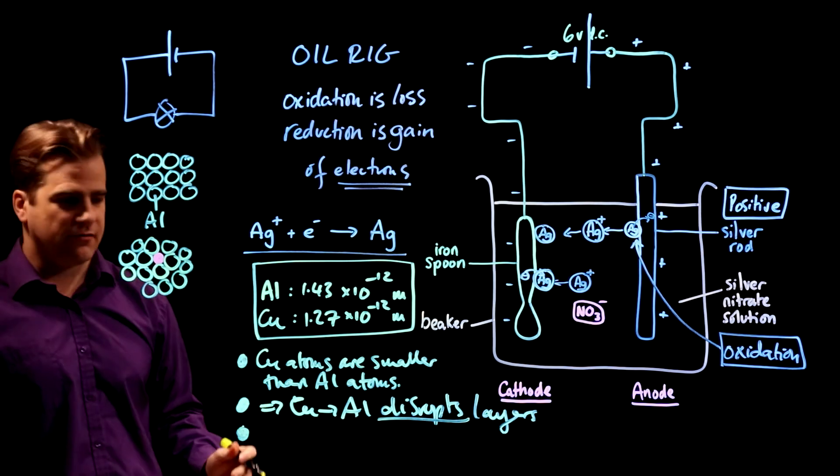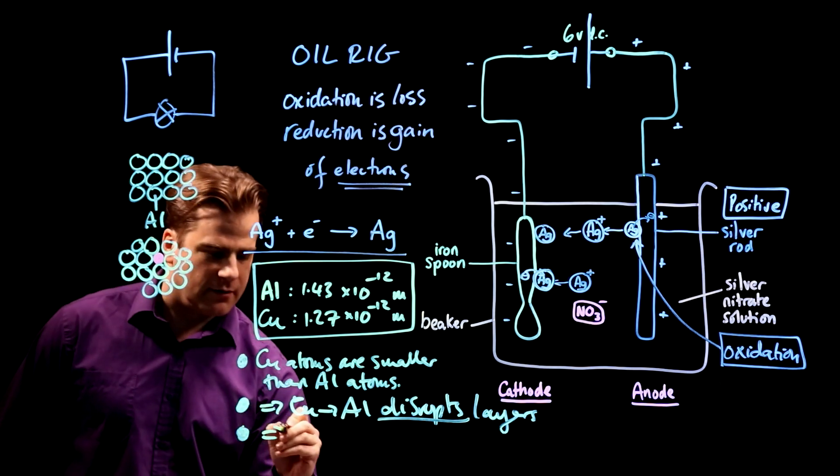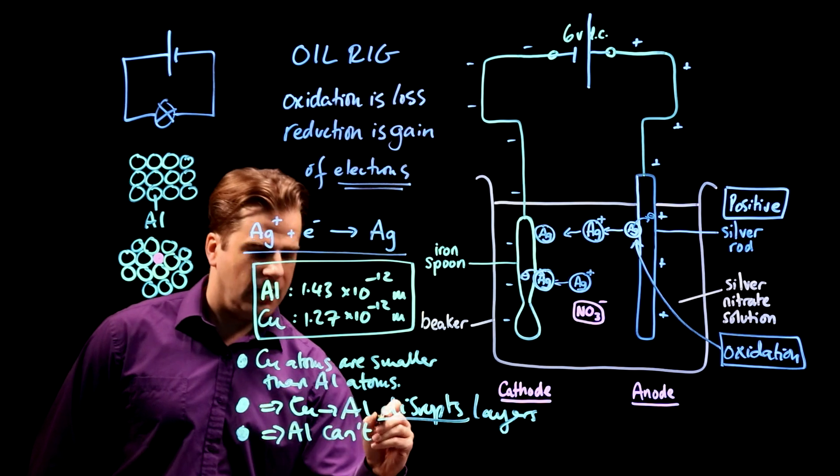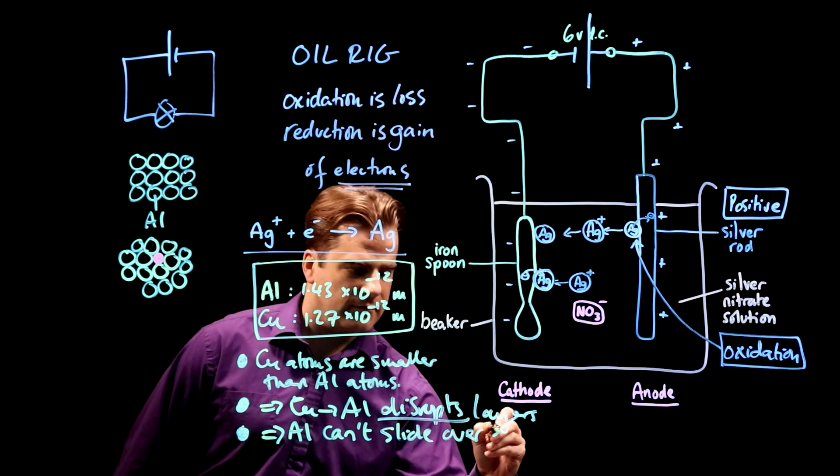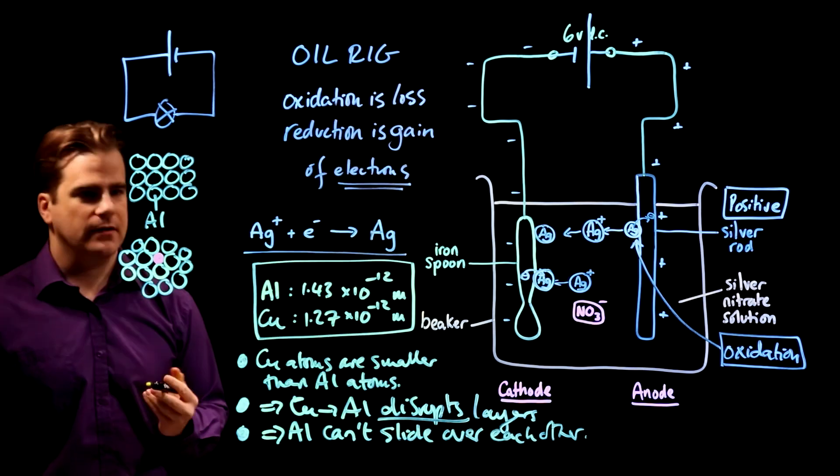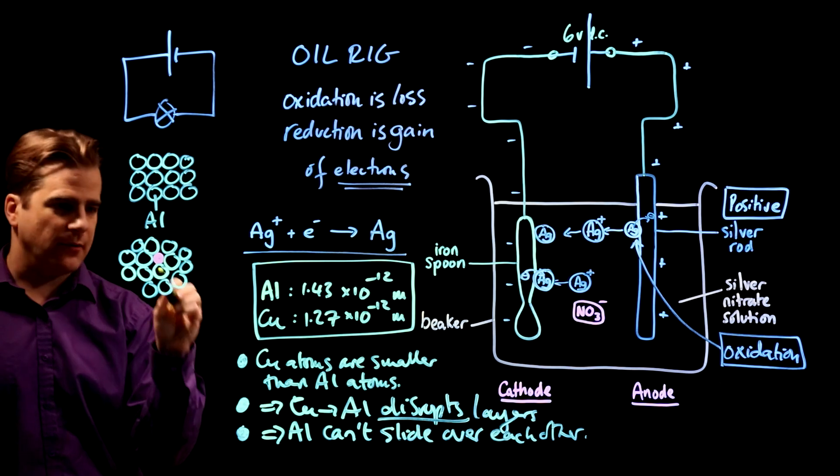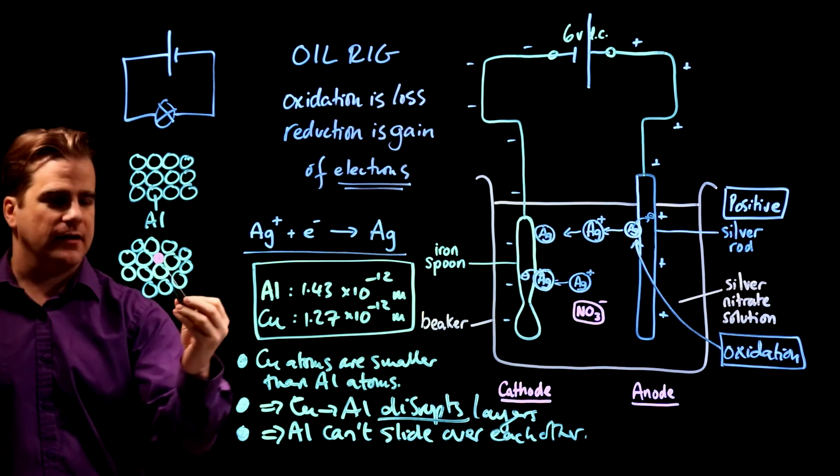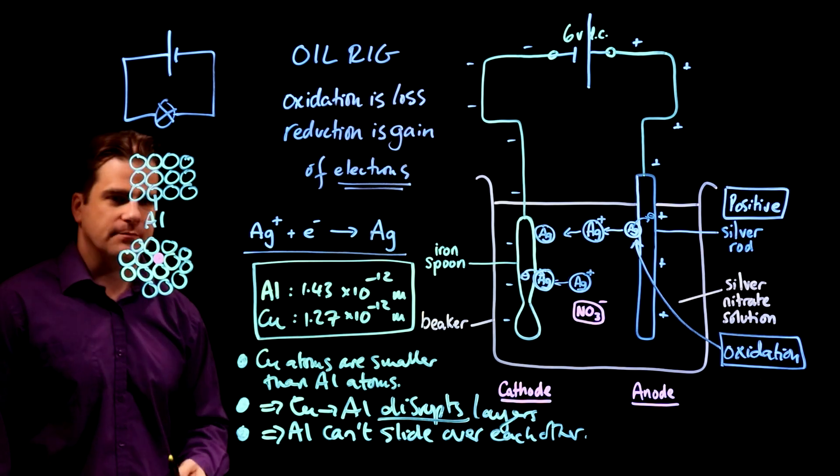Two more question. I'm trying to say three things. And therefore the aluminium layers can't slide over each other. Pure aluminium is soft because these layers can slide over each other. When you, it's called doping, when you dope it with smaller atoms, it disrupts the layers and they can't slide over. And that makes it stronger. Good.